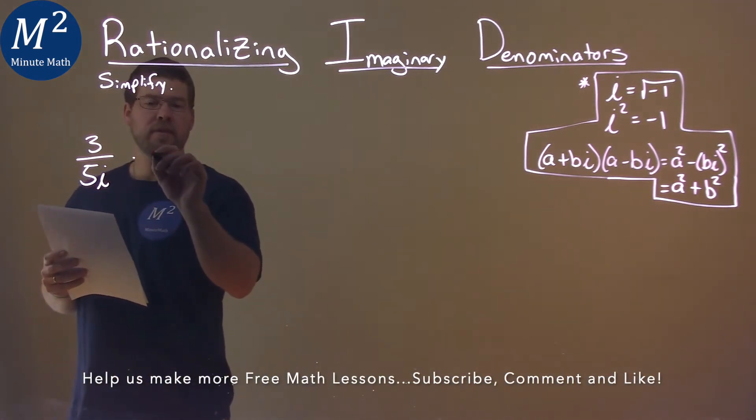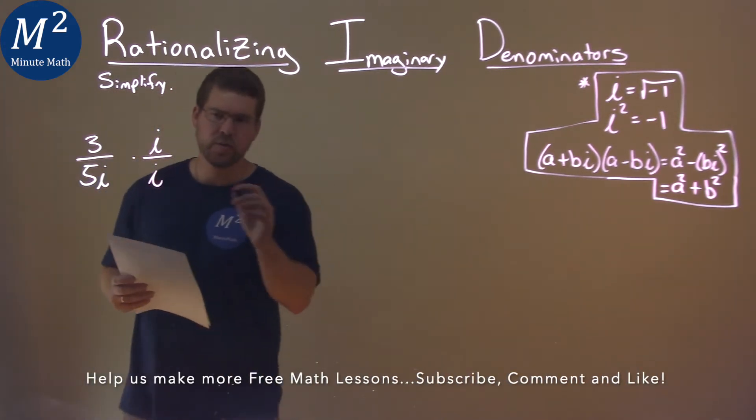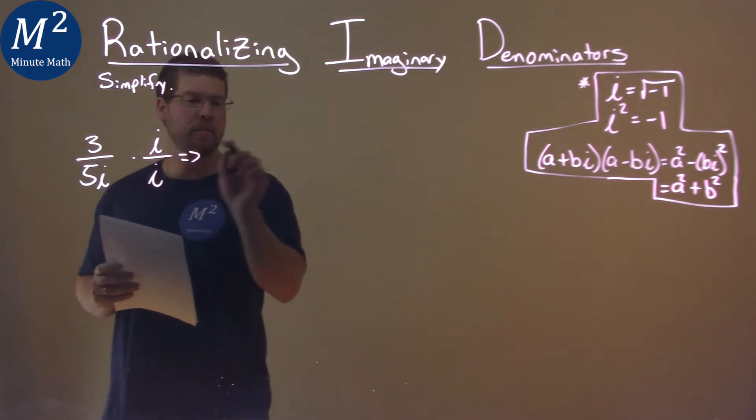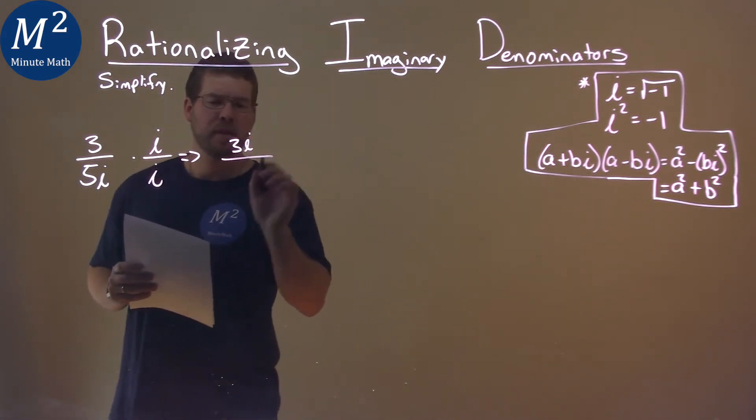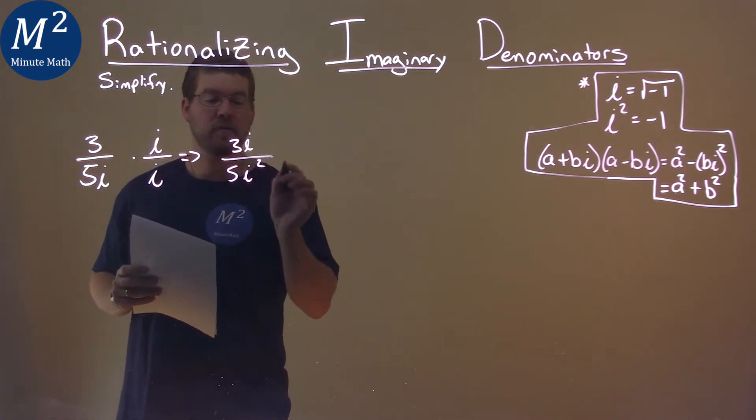First thing I want to do is multiply this by i over i. In doing so, what happens? You multiply across the numerator: 3 times i is 3i. The denominator: 5i times i is 5i squared.